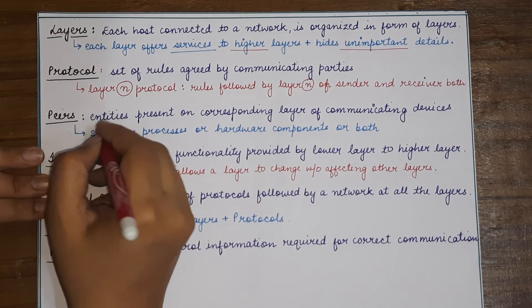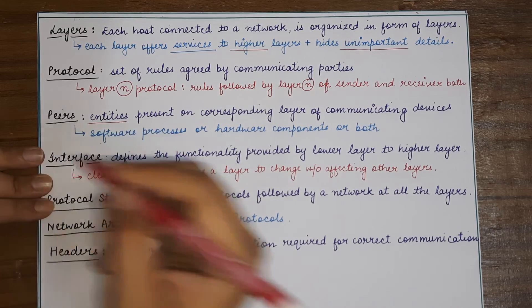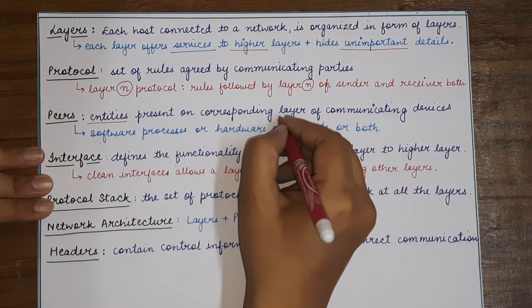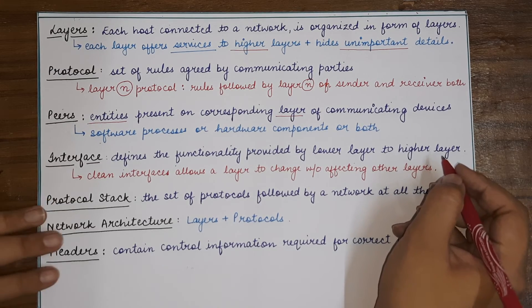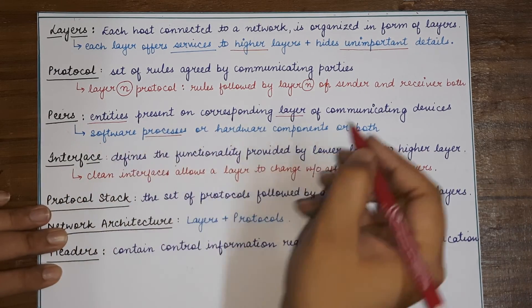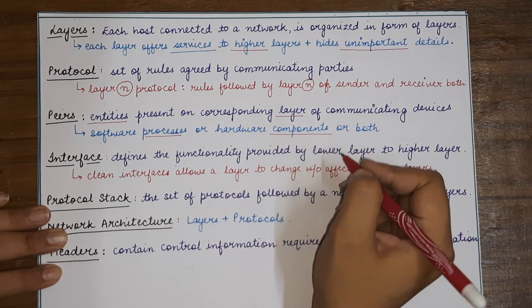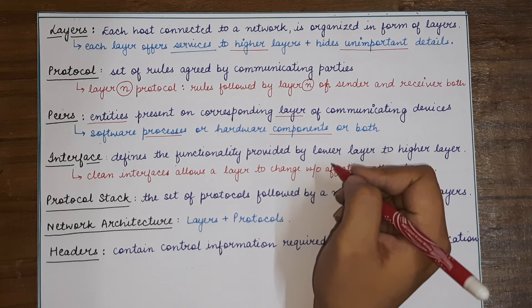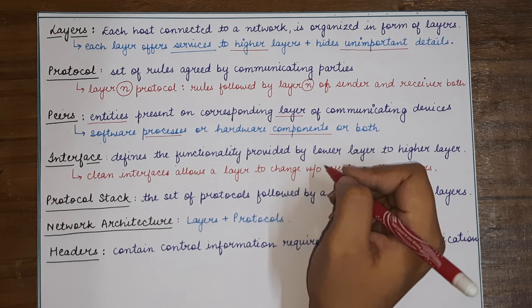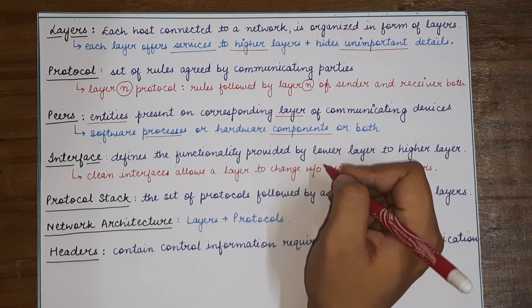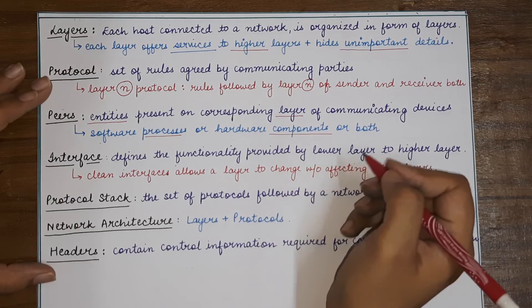Peers are the entities running on the corresponding layer of each communicating machine. Peers can be software processes or hardware components that enable communication. Whether we talk about protocols or peers, we are always talking about corresponding layers — meaning layer 5 corresponds to layer 5 of the other end, and so on.